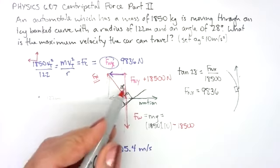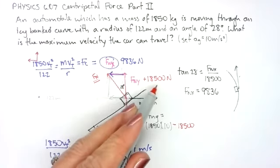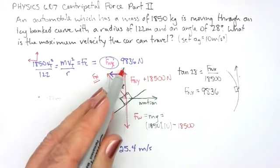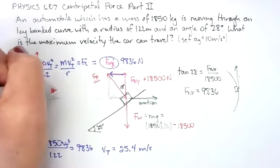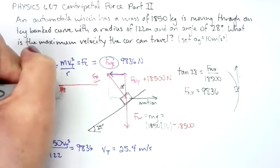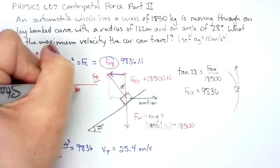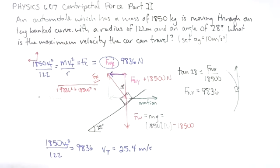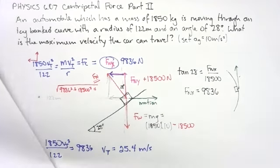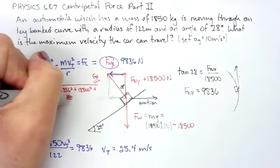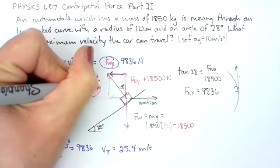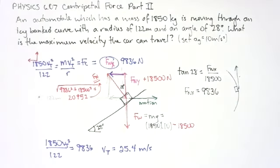So let's just throw this calculation in. If I have a right triangle and one leg is 18,500 and the other leg is 9836, I do square root 9836 squared plus 18500 squared. That's going to give me a normal force of 20,952. So that's done for the next problem.